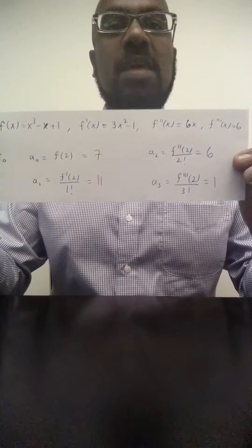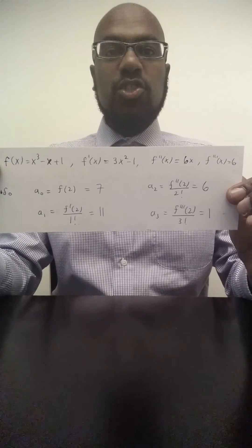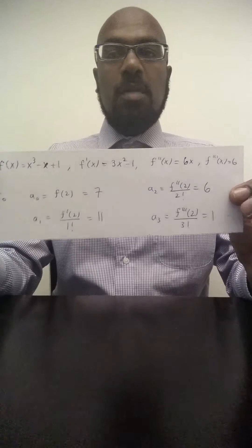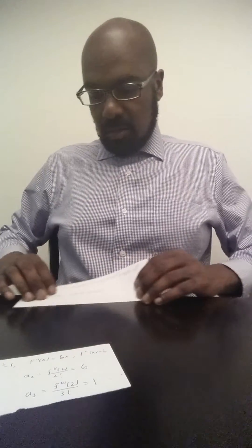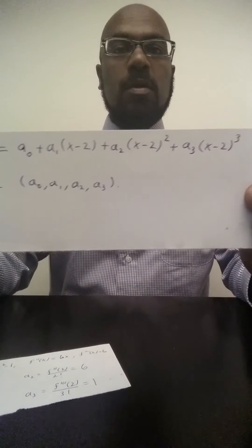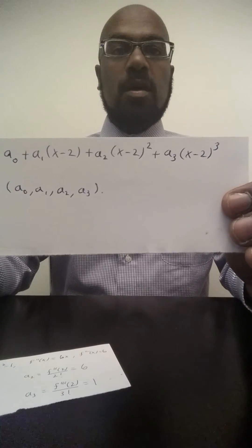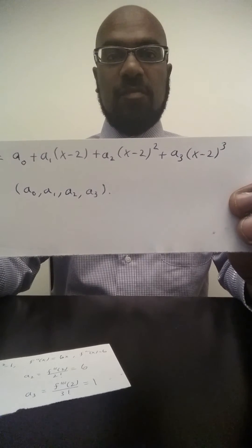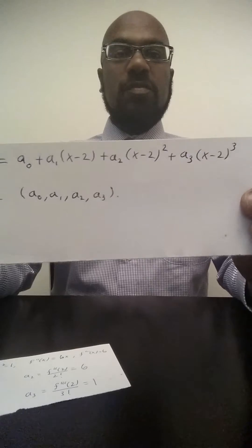So there you have it: recognizing a Taylor series question on the GRE by noticing a polynomial written not in terms of the given variable, like the variable x, but in terms of a shift of that variable.